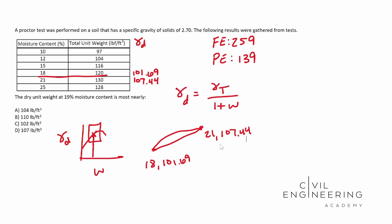And so whenever we solve for the slope between those two points, you can go 107.44 minus 101.69. We can put that over 21 minus 18. And this guy ends up being 1.92. So this is our slope for this line right here. That's all we solved for.